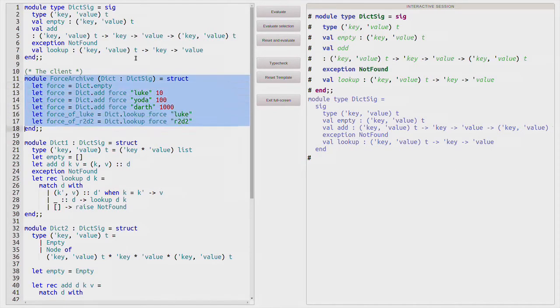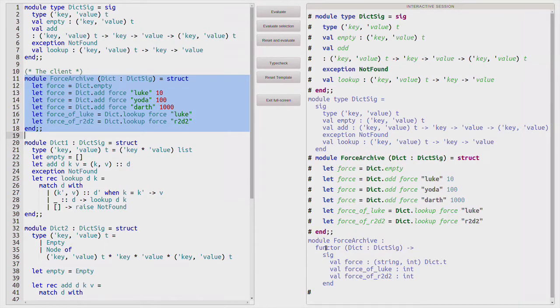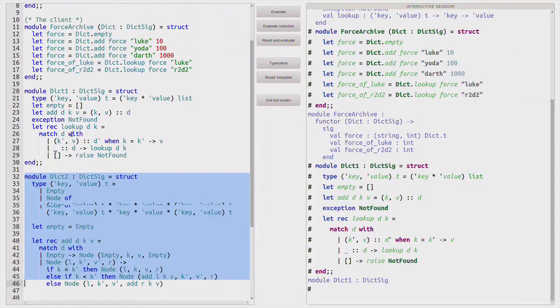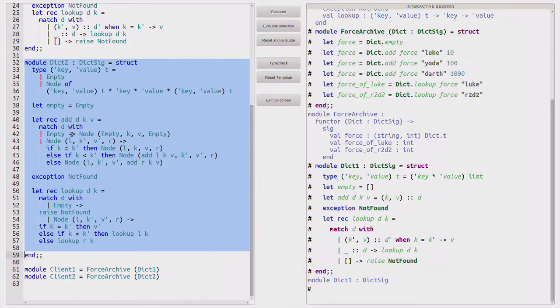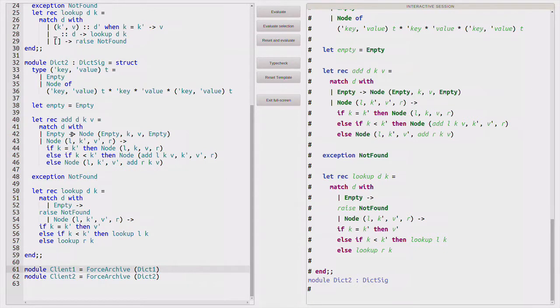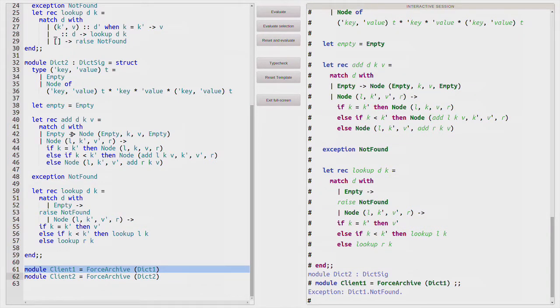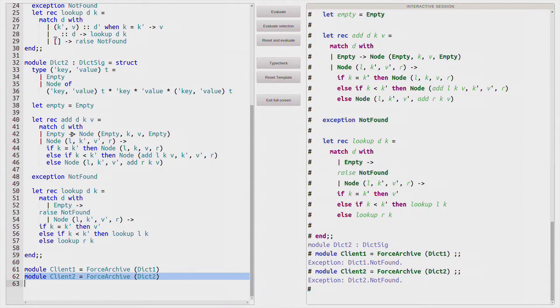The rest of the code doesn't change. But now, we have not a module, but a functor, that is, a parameterized module. If we have two different implementations for the dictionary, like this, on list, and like that, on binary search trees. Now, I can define not only one client, but two clients. The first client that is implemented using the dictionary represented as list. And another client whose dictionaries are implemented using binary search trees.